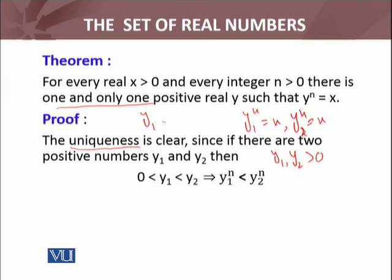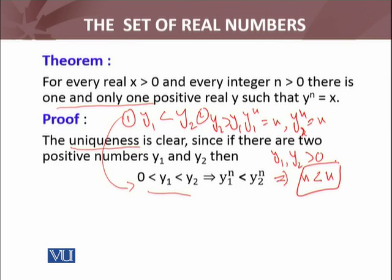If 0 < y₁ < y₂, then y₁^n < y₂^n. But both are equal to x, which means x < x, which is of course not possible. So uniqueness is clear. Similarly, if y₂ < y₁, we reach the same contradiction.